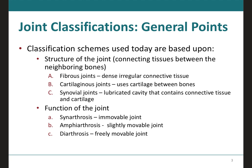Over the years, anatomists have used a variety of schemes to classify the various joints of the body. Some are going to be based on joint structure and others use joint movements or function. Because these are two different methods, the classification schemes based on movement will place joints of similar structure in different categories. With regards to classifying by structure, this means the material that is between the joints. We have three different types: the fibrous joints, the cartilaginous joints, and the synovial joints.